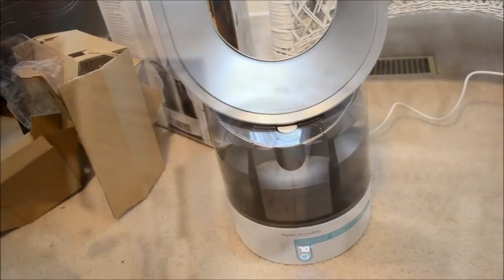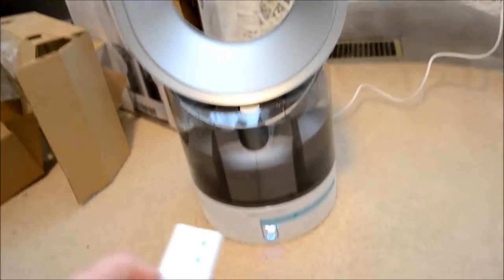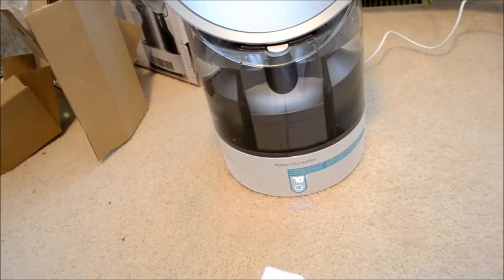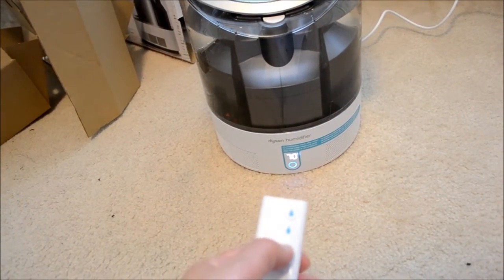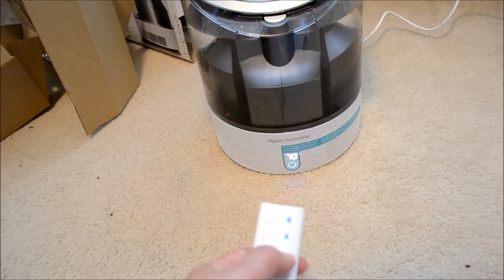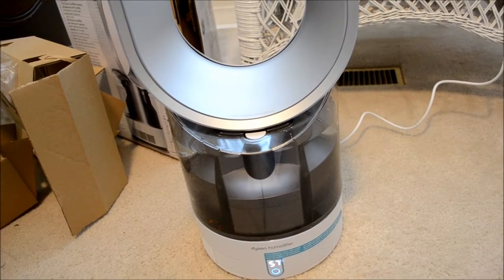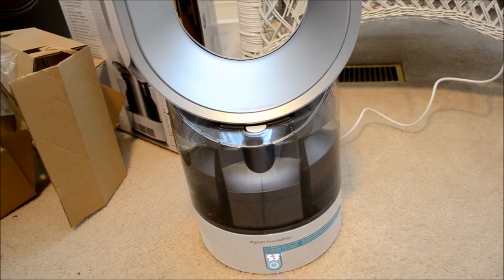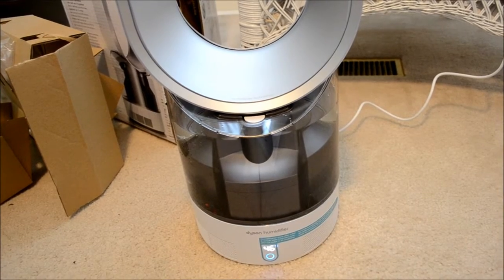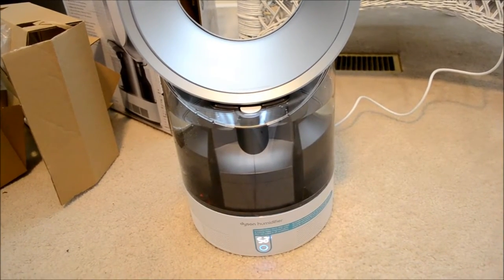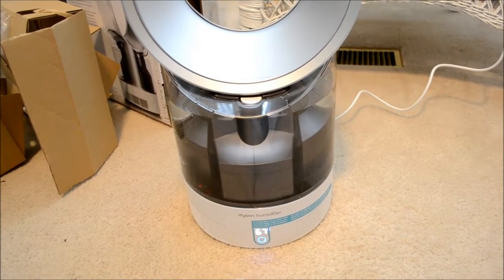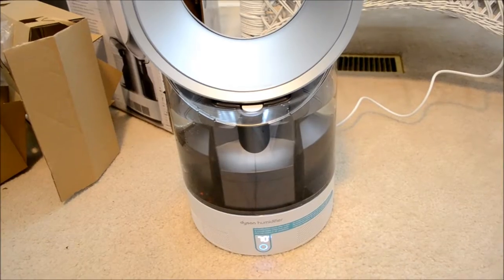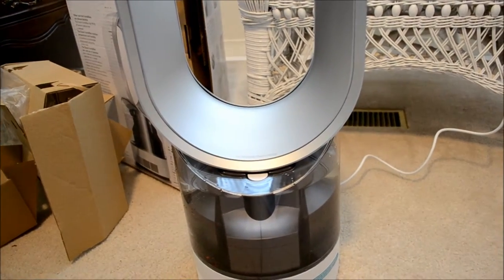So right now it's at 70%, but you can turn it down so that it's not humidifying as much. You can change the settings right here. If you want less mist, you can turn this down, and you see right away that the mist stops pretty much. But it's still working. And then if you want the mist, you turn it up obviously, and there it comes back again.